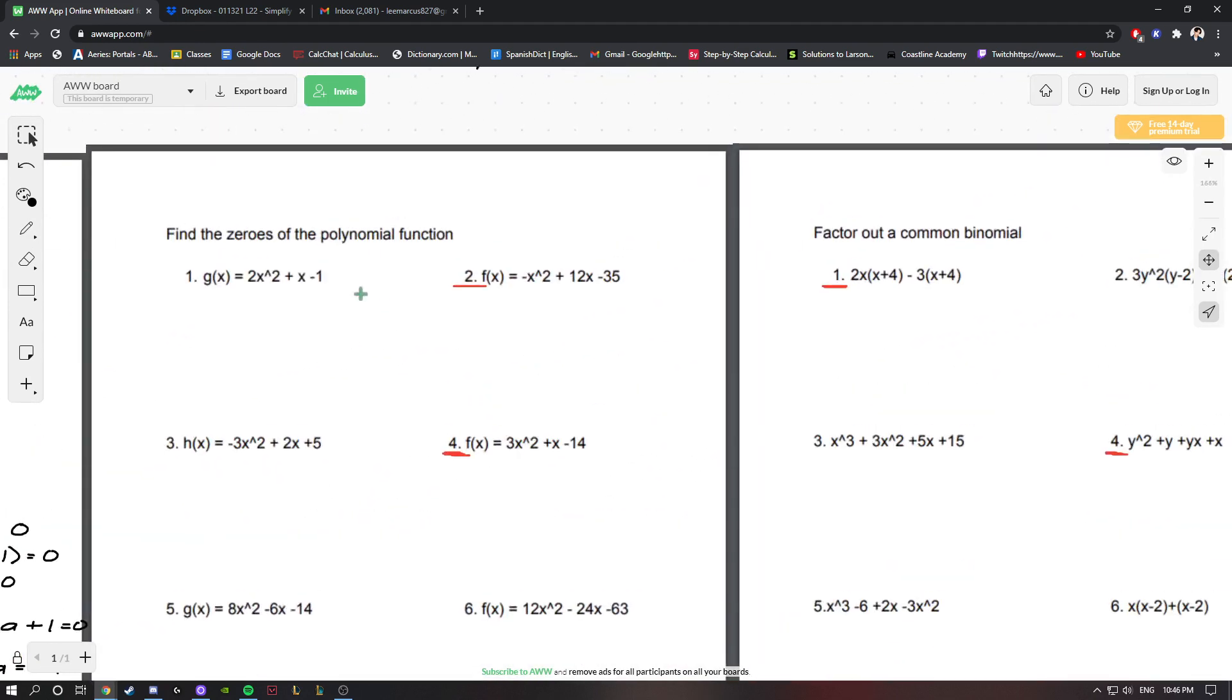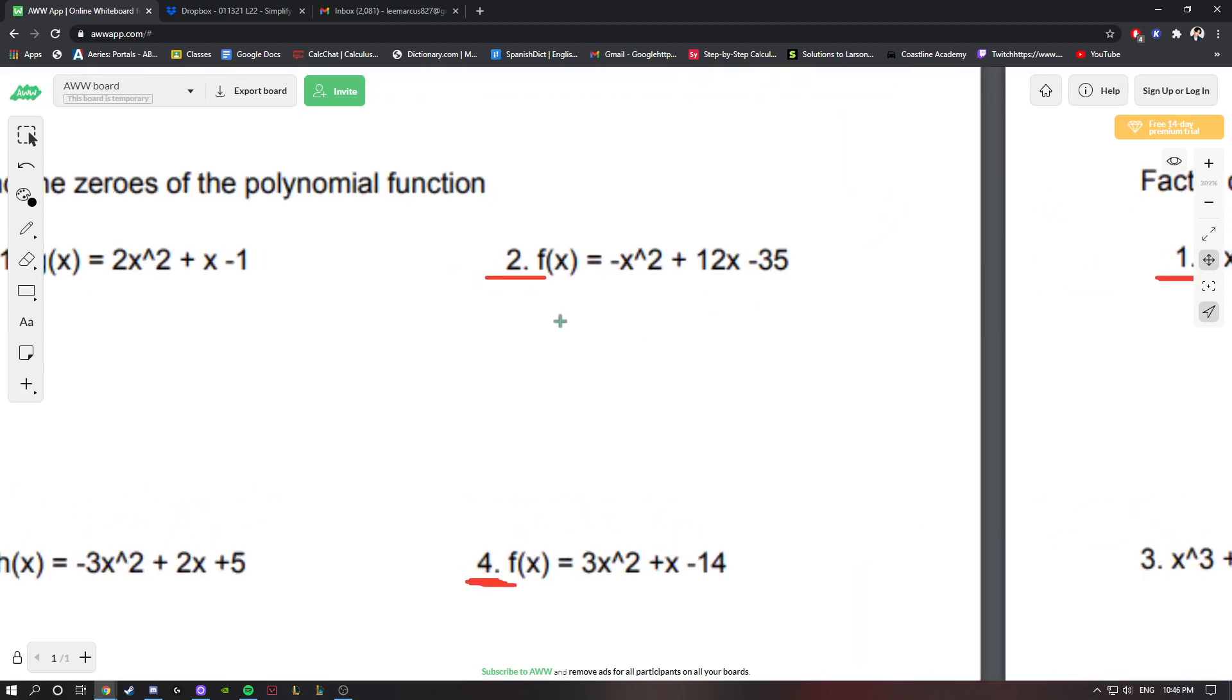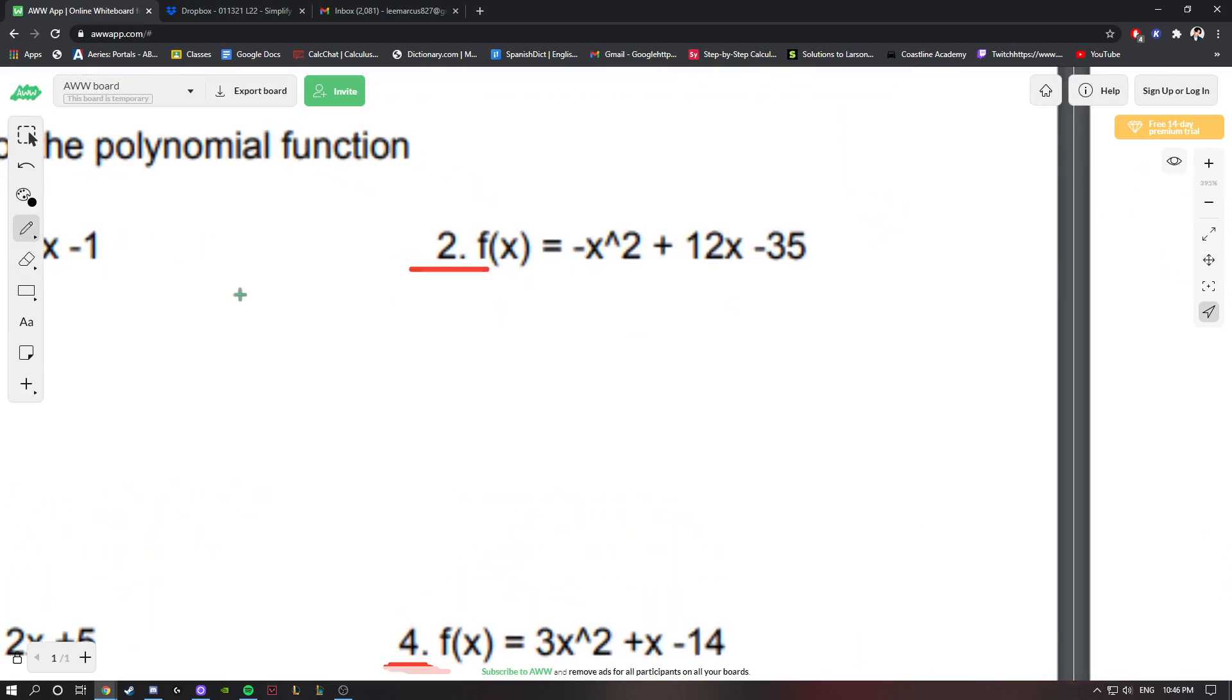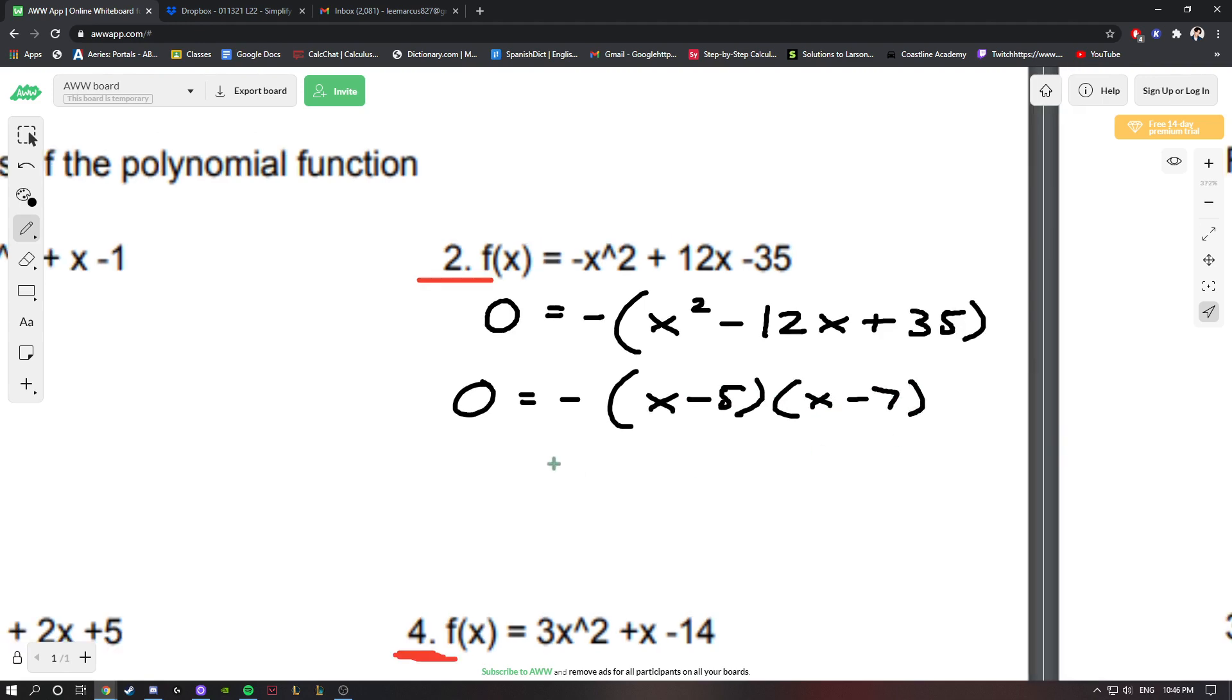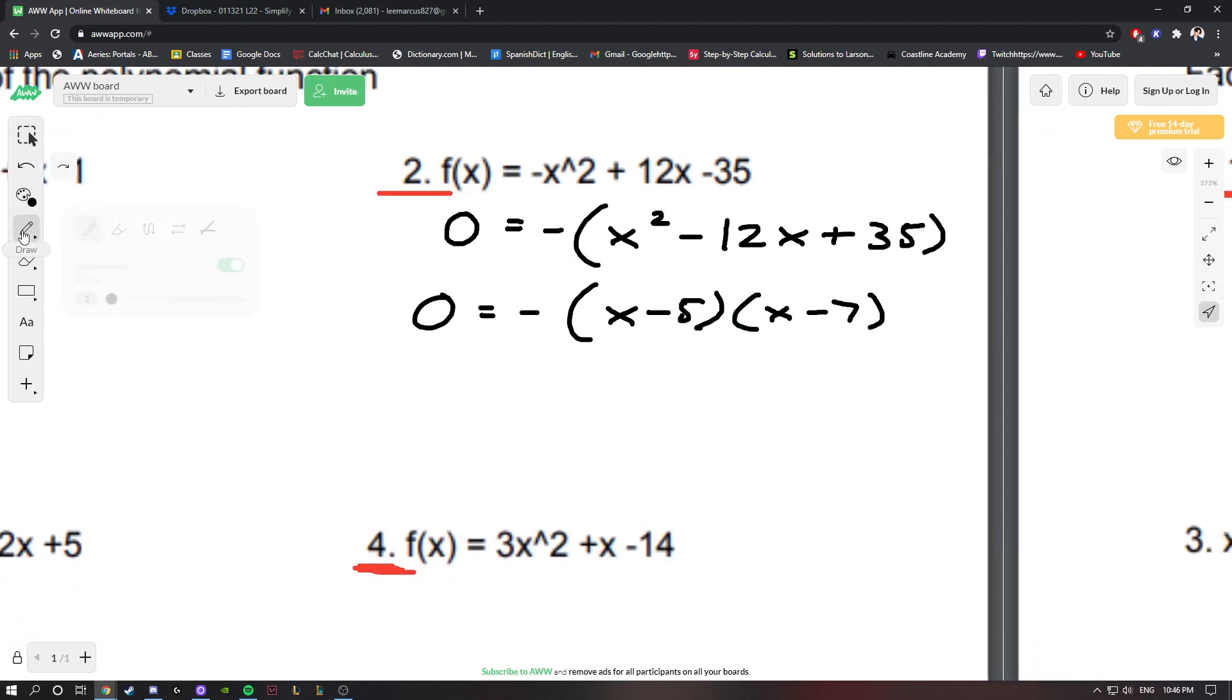That's page 2 done. Page 3, it says find the zeros of the polynomial function. When we're instructed to find the zeros of the polynomial function, we want to set this f(x) equal to 0. Previously I factored out this negative and then just factored normally. Here I will get -(x - 5)(x - 7). We could do 0 = -(x + 5) and 0 = x - 7, so we'll get x = 5 and x = 7.